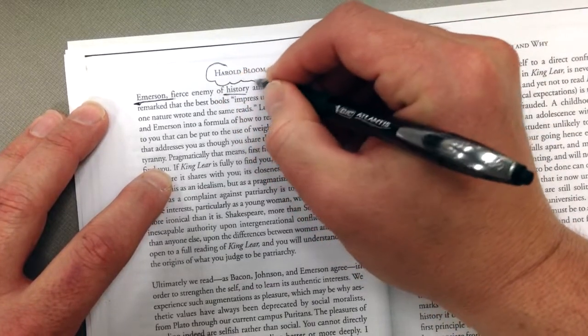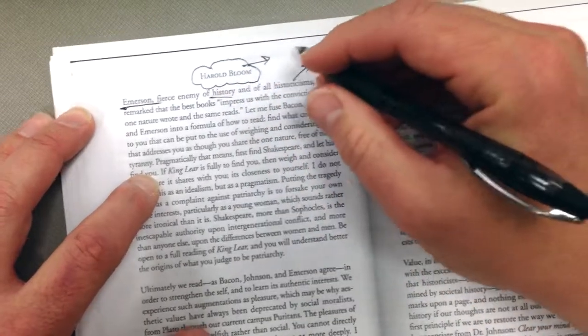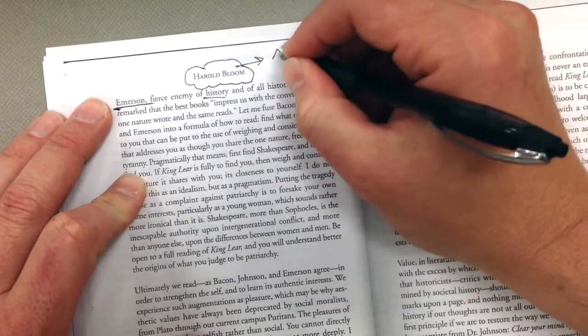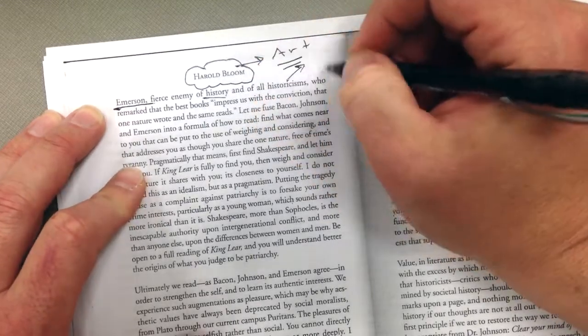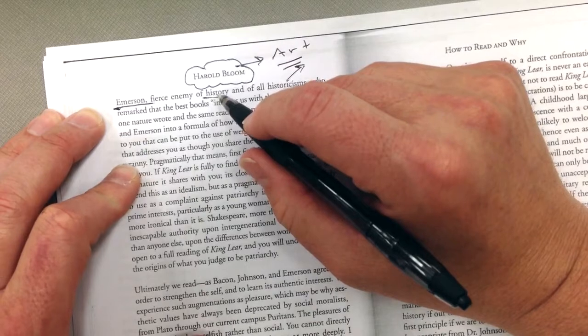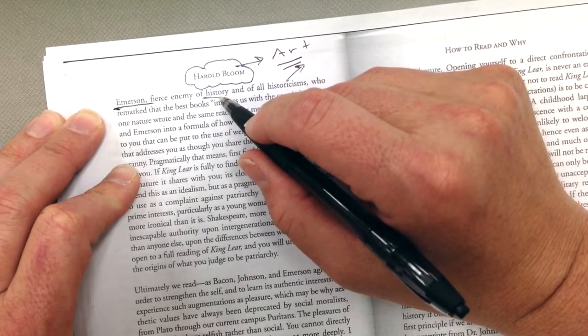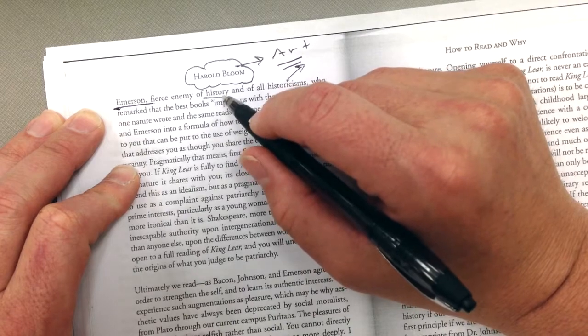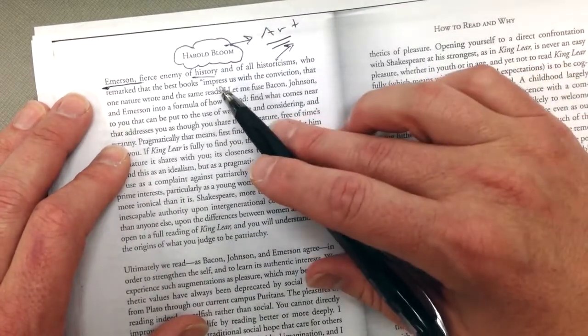So Harold Bloom, as a guy, he thinks that literature should first and foremost be regarded as art. And there's a lot of people who disagree with him that say that when we read Shakespeare, we should read it to learn about history. Or, you know, he thinks that that's not really the case. We don't need to get too much into that, though.